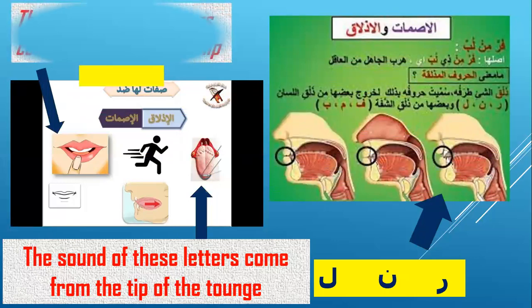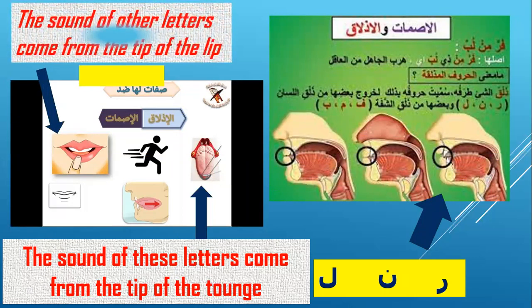But the sound of other islaq letters comes from the tip of the lips — letter fa, meem, and ba: af, am, ab.